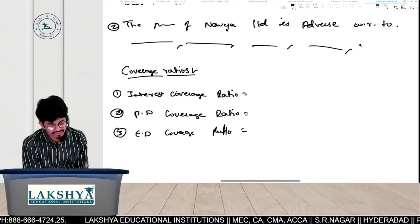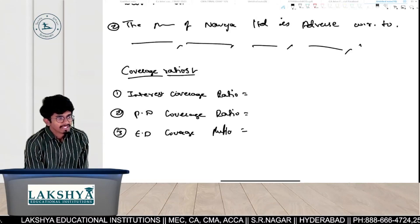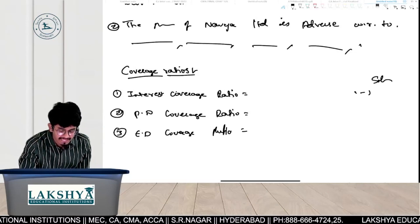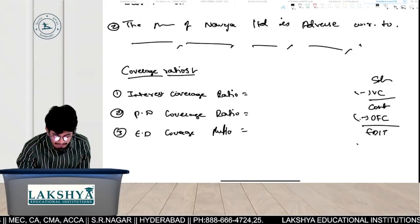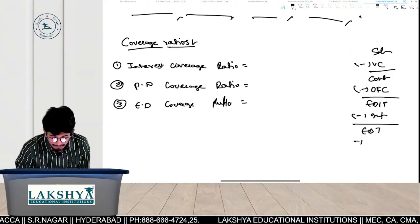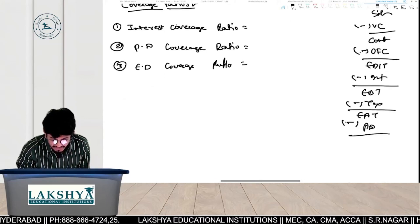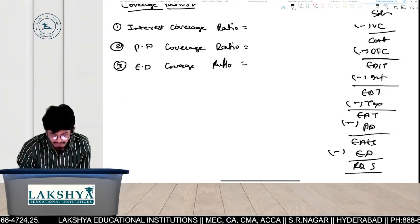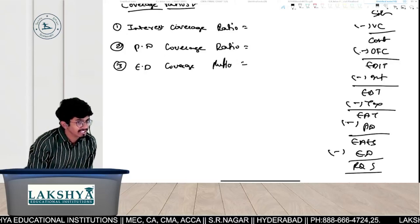So we have Interest Coverage, Preference Dividend Coverage, and Equity Dividend Coverage Ratio. Looking at the Income Statement: Sales minus Variable Cost gives Contribution, minus Operating Fixed Cost gives EBIT, minus Interest gives EBT, minus Tax gives EAT, minus Preference Dividend gives Earnings Available to Equity Shareholders, minus Equity Dividend gives Reserves and Surplus.